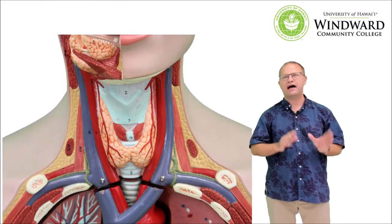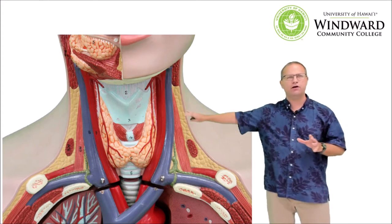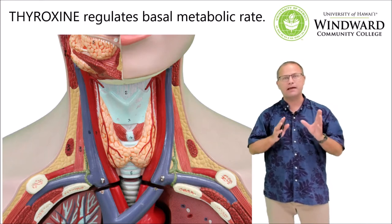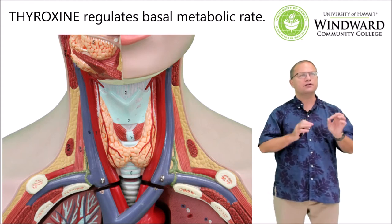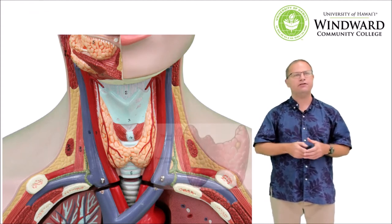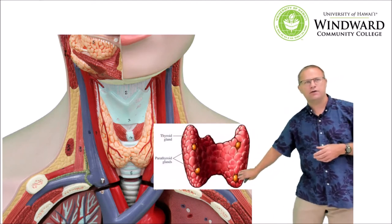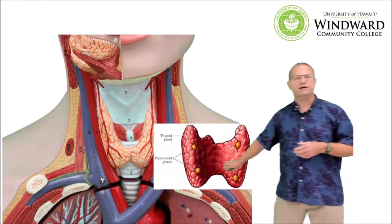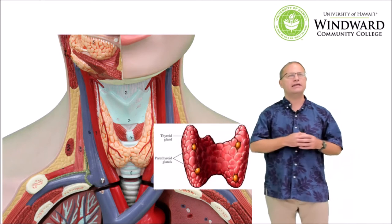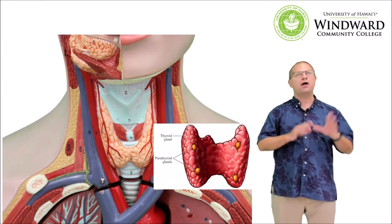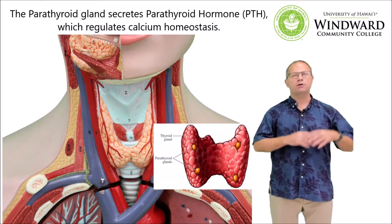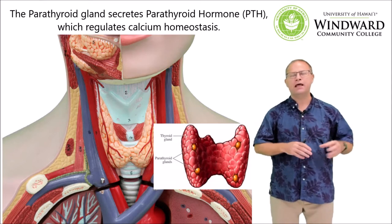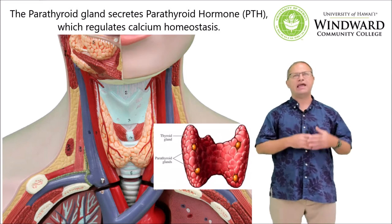Now let's talk about the thyroid gland again. The thyroid gland is located on the Adam's apple or larynx and is important in producing thyroxin, which regulates our basal metabolic rate. We also need to discuss the parathyroid glands, which are located on the backside of the thyroid gland. They're very insignificant-looking glands, but they're very important because they produce parathyroid hormone, which regulates calcium levels in the body. Parathyroid hormone is secreted when blood calcium levels decline, and it helps to advance the activity of osteoclasts in bone to break down bone and free up blood calcium for homeostasis.